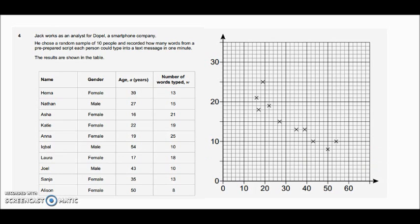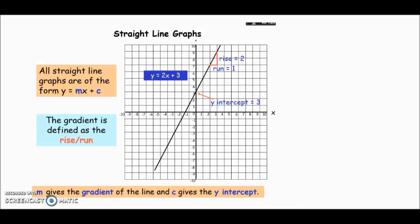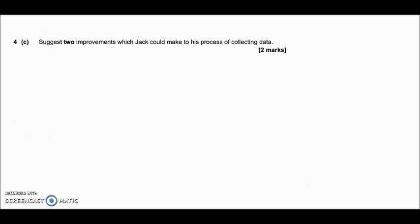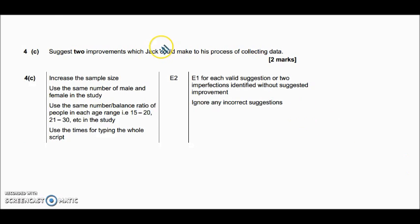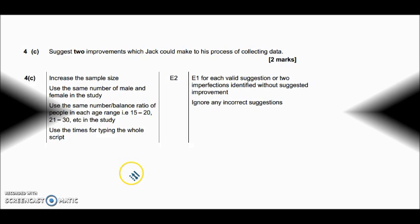Hopefully you've had a go at that. Let's look at what you'd get on the mark scheme. Generally, he only did 10 people, so the first thing they suggest is increase the sample size. The more people you sample, the more reliable the data is going to be. It says balance out the male and females - have the same number. There are some other reasons there. Pause the video, have a read and see what the mark scheme asked for. I hope that helps.